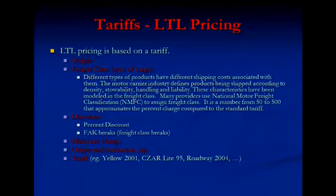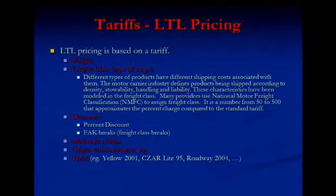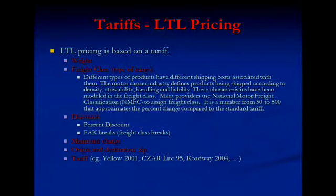The next thing I have to tell the tariff is a discount. Typically you negotiate a discount, and if you're using a CZAR tariff, discounts range anywhere from 50% to 80% — which is kind of funny, because if everybody gets a 50% discount, it's about the same as nobody getting one. Typically discounts are high off CZAR. There's also a minimum charge, and then I type in the origin zip, the destination zip, and the tariff, and it spits out a price.